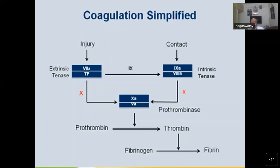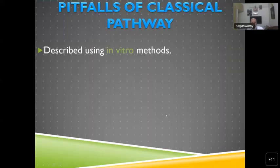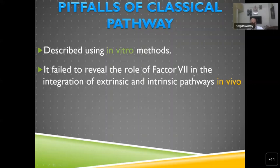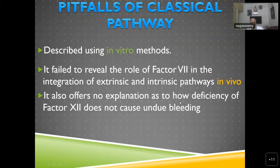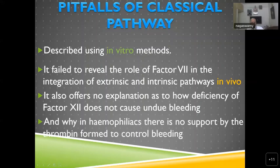The pitfalls of this classical pathway are that it was described using in vitro methods — all testing was done in test tubes. It failed to reveal the role of factor 7 in the integration of extrinsic and intrinsic pathways in vivo, and offers no explanation for why deficiency of factor 12 does not cause bleeding, or why in hemophilia there is no support from the clotting system to control bleeding.